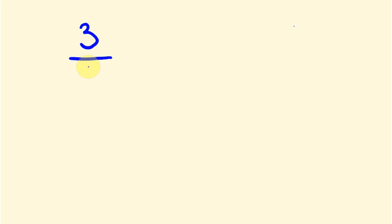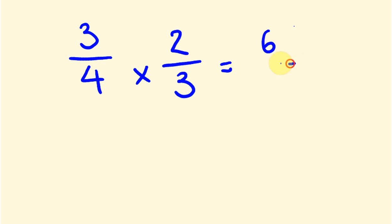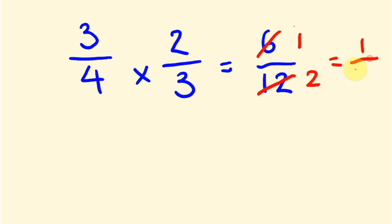Let's try another example. What is three quarters times two thirds? Give that a go. So three times two is six, and four times three is twelve. You can take this further because there's a number that goes into both the numerator and denominator — the common number that goes into both is six. Six goes into six once and six goes into twelve twice, so this is the same as a half.